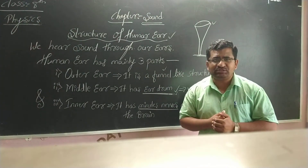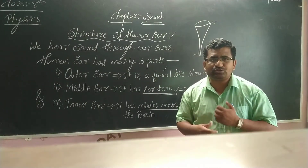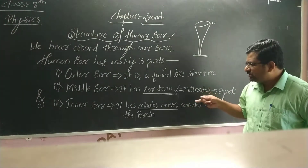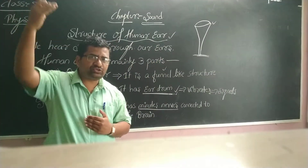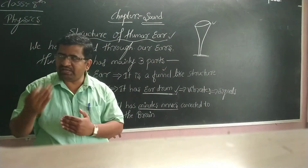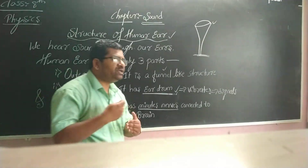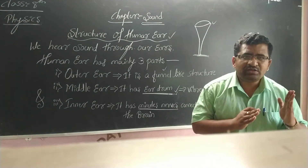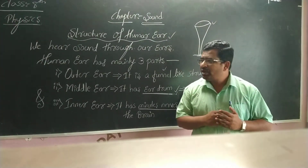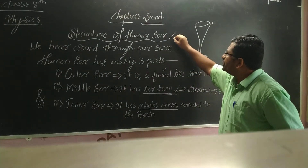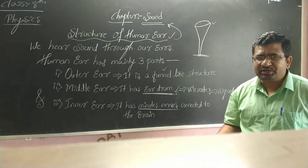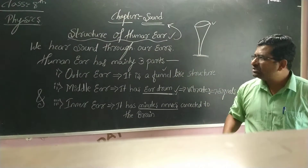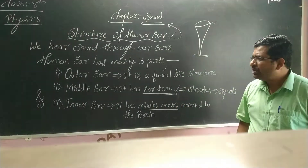After the brain analyzes the signals, we give a response — just like a stimulus-response action. The signals raised by the nerves act as a stimulus, the nerves carry the stimulus to the brain, and the brain analyzes it, after which we give a response. This is how the human ear works, and this is the structure of the human ear — a very important part of the lesson on sound.